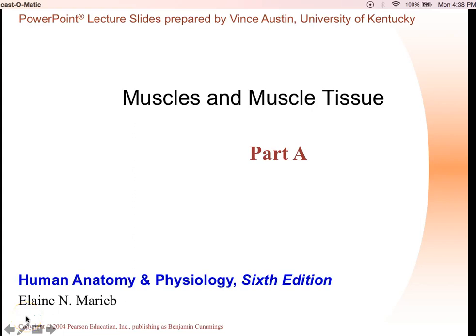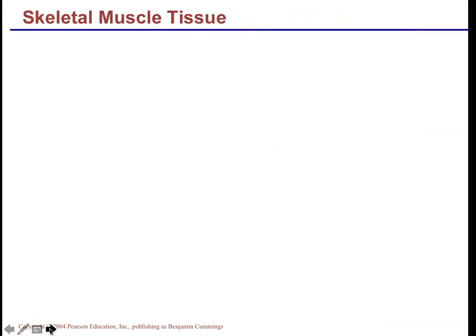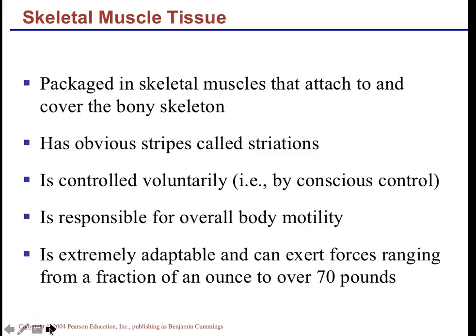This is an introduction to skeletal muscle and skeletal muscle tissue. Skeletal muscle is actually very long and has striations — a dark-light-dark-light banding pattern. Skeletal muscles attach to the skeleton, and it is through the contractions of these muscles that the skeleton is able to move. The striations are the light and dark banding pattern.